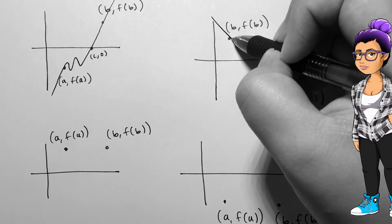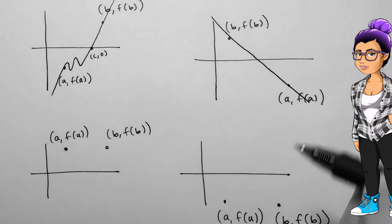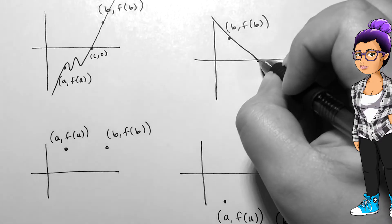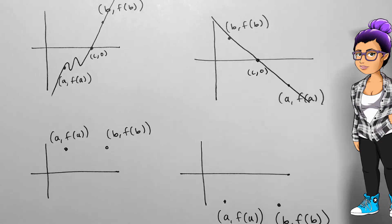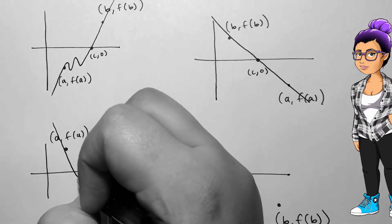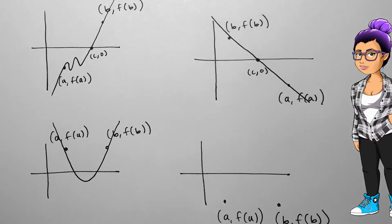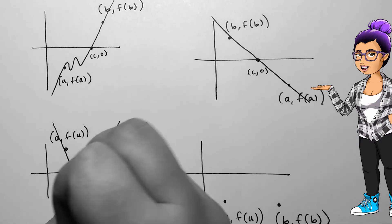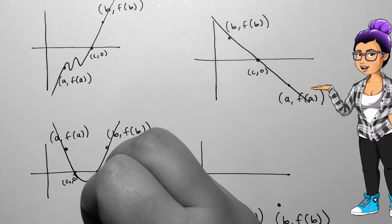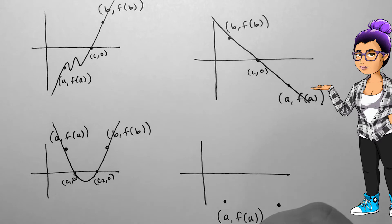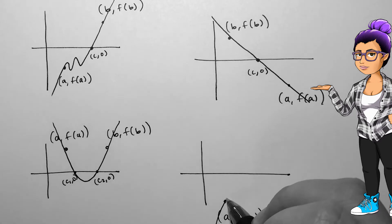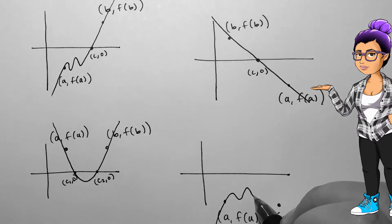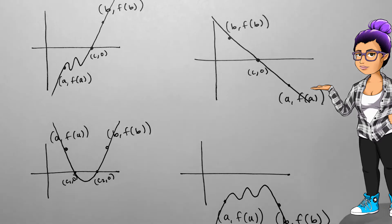This theorem does not extend enough to say that two points on a polynomial function which lie on the same side of the x-axis don't have an x-intercept between them. We would need more information to figure this part out. In this situation, there could be no x-intercept, one x-intercept, or two x-intercepts.